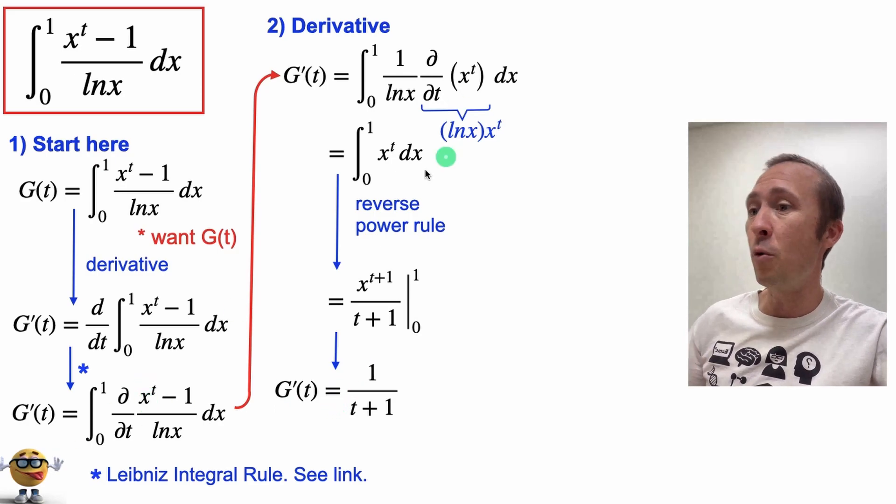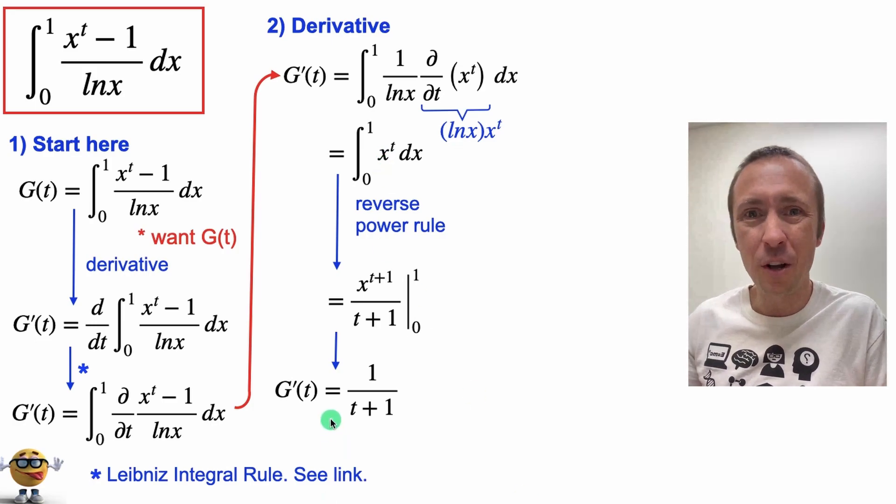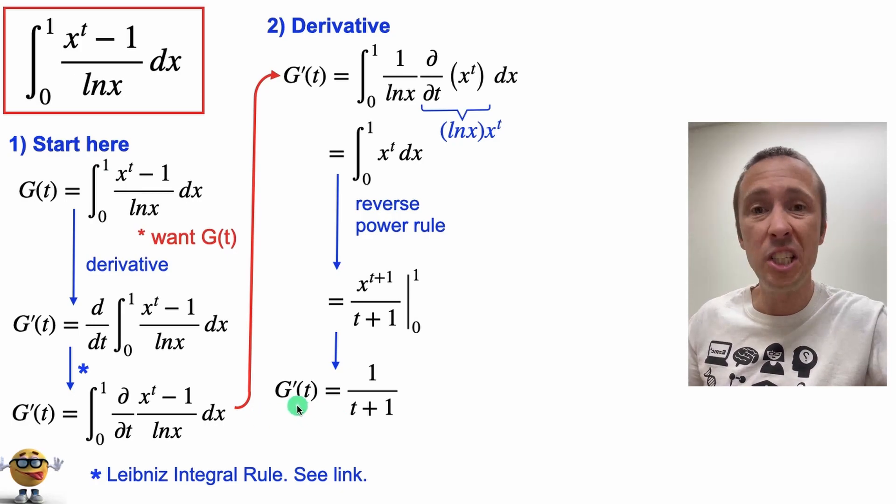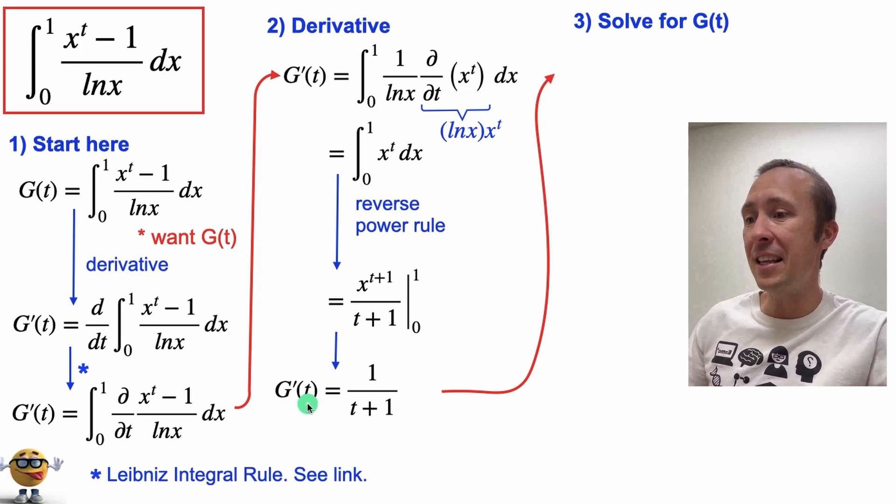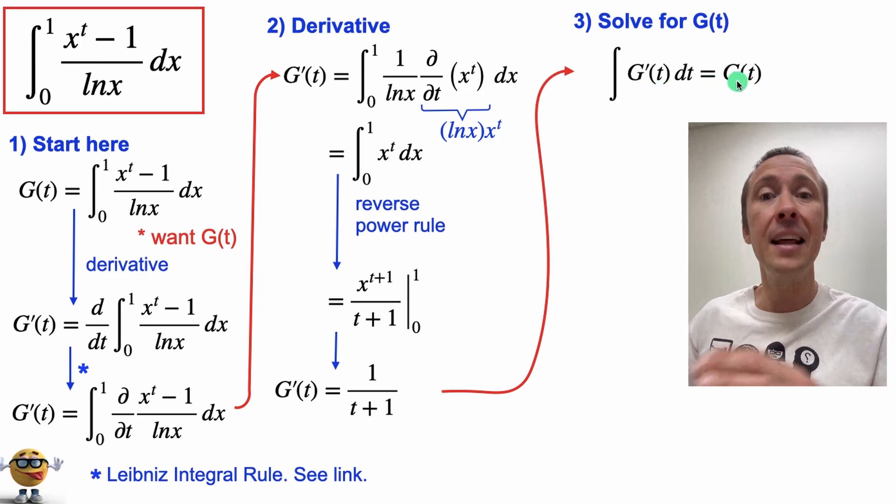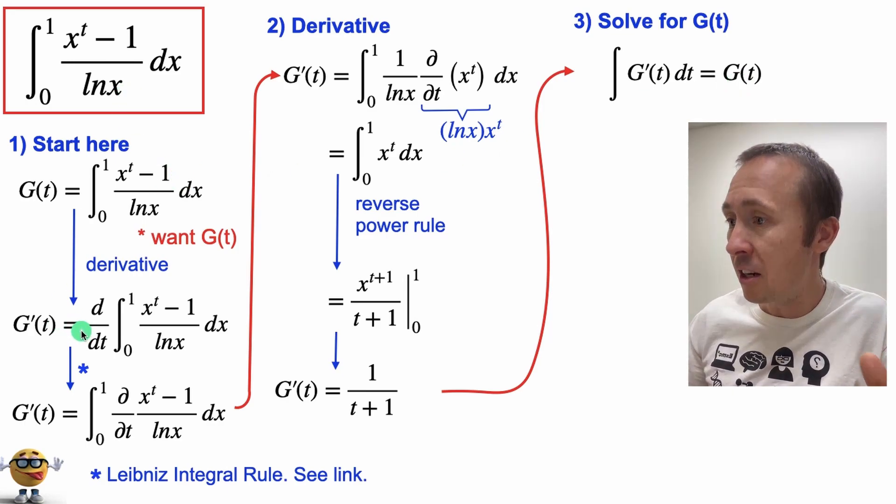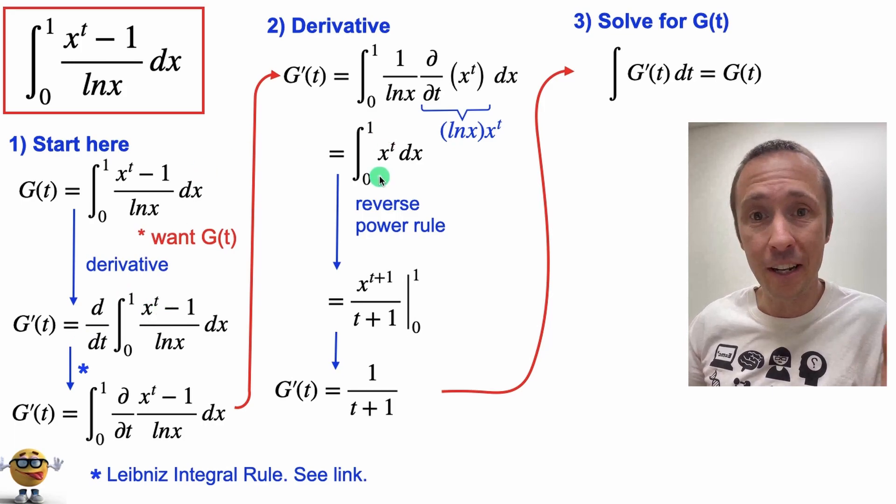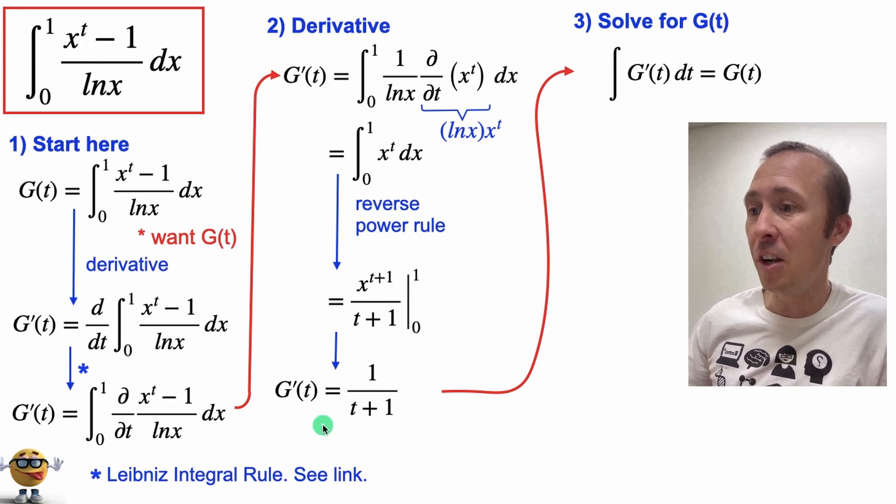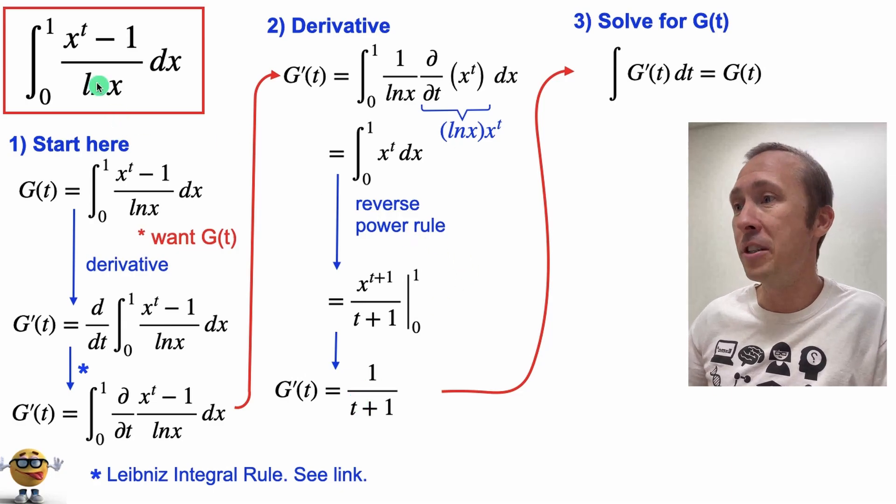So we took the derivative in order to make the integral easier. Now we haven't really solved our problem because we don't want G prime of t we want G of t so we need to take the integral of G prime of t to find out what G of t and again this is part of the trick. So we have an integral that we don't know how to do so we took the derivative which gave us an easier integral that we can do and now we have to do another integral that's easier. We can evaluate this one, this is an easier integral in order to get the one we want.